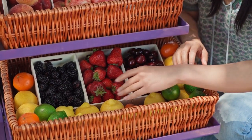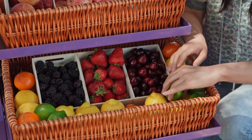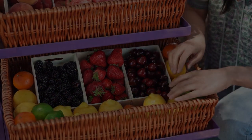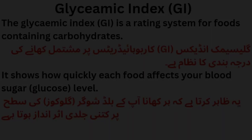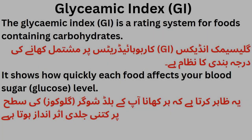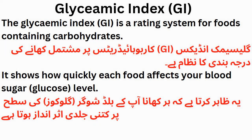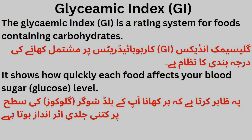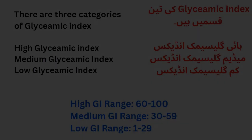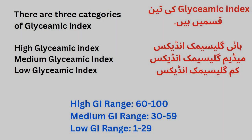First I will explain what is a glycemic index. It is a rating system for food containing carbohydrates. When you eat any food or fruit, the GI shows how quickly each food affects your blood sugar level.